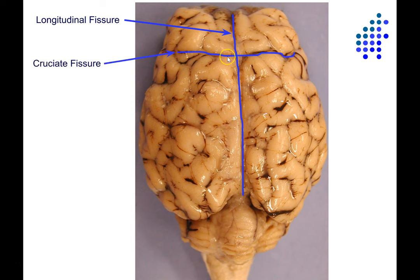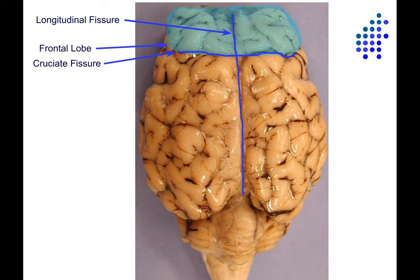Here we have the cruciate fissure. You can see it forms a cross with the longitudinal fissure, which is where it gets its name — cruce is the Latin word for cross. Everything anterior to the cruciate fissure, highlighted in teal, is the frontal lobe. We divide the cerebral hemispheres into four lobes, named after the four skull bones that overlie them. The frontal lobe is all the way toward the front, or anterior part of the brain.